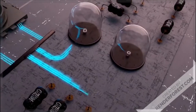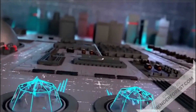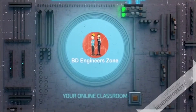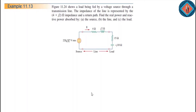Welcome to Video Engineers on YouTube channel. We have a lot of tutorials about the fundamental of electrical circuits. Chapter 11, Example 11.13. It shows a load being fed by a positive source for a transmission line. The impedance of the line is represented by the 4 plus j2 ohm impedance and a return path. Find the real power and reactive power absorbed by the source, the line, and the load. This is a small transmission line and reactive power system.